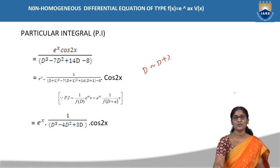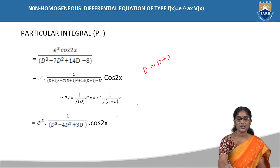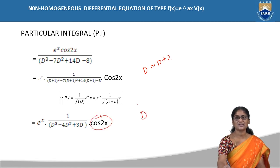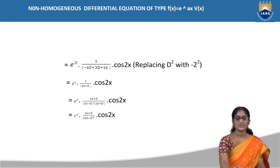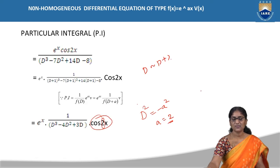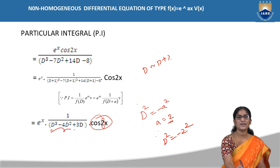Now expand using (a+b)³ and (a+b)² formulas. Writing the denominator in simplified form gives e^x into 1/(D³ - 4D² + 3D) into cos2x. Since Q(x) is now cos2x, we substitute D² = -a² where a = 2, so D² = -4. In the denominator: D·D² gives -4D, and the expression becomes e^x into 1/(-4D + 16 + 3D) into cos2x, which simplifies to e^x into 1/(16 - D) into cos2x.